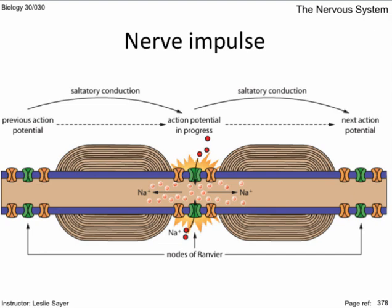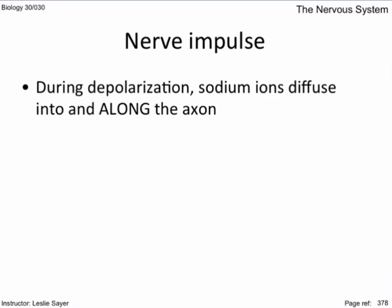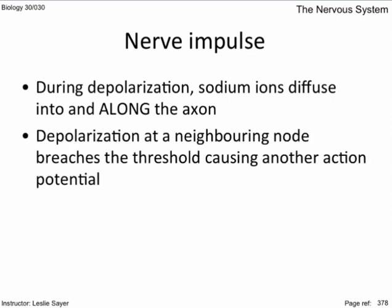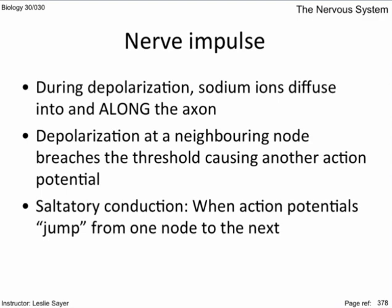Action potentials only occur at the nodes of Ranvier. During depolarization, sodium ions diffuse into the cell and then along the length of the axon. When the sodium ions reach neighboring nodes, the increase in positive charge at that node depolarizes it to threshold, causing an action potential. Sodium ions moving the other way in the axon encounter a node in refractory from a previous action potential, ensuring impulses don't go backwards. Since action potentials can only occur at the nodes of Ranvier, the jumping from node to node is called saltatory conduction, resulting in faster impulse transmission compared to an unmyelinated neuron.